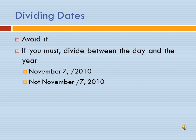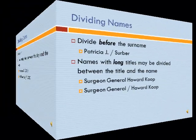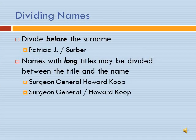Dates are another thing we don't want to divide from one line to the next. If absolutely necessary, we can divide between the day and the year — such as 'November 7,' on one line and '2010' on the next. We would not want to divide between the month and the day. Names are also information we don't like to divide. If needed, we can divide before the surname — 'Patricia J.' on one line and 'Suber' on the next. We would not divide between 'Patricia' and 'J.'